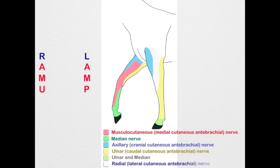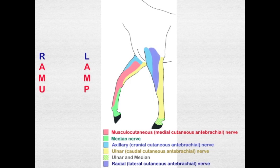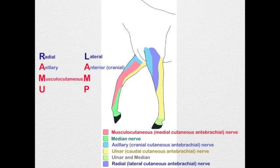Finally, the lateral aspect of the antebrachium is provided by the lateral cutaneous antebrachial nerve, coming off the superficial branch of the radial nerve. So radial is lateral. To summarize: Radial is lateral, Axillary is anterior, Musculocutaneous is medial, Ulnar is posterior or caudal — that's how we get RAMUЛAMP. I hope you enjoyed the show and learned something in the process.